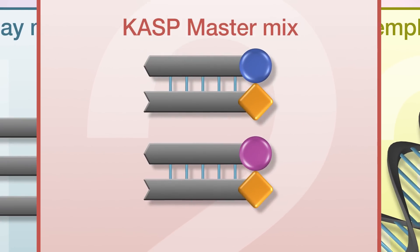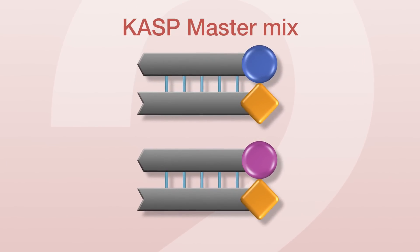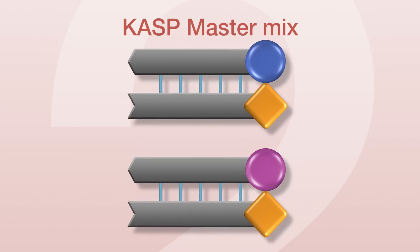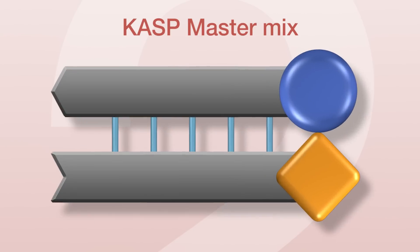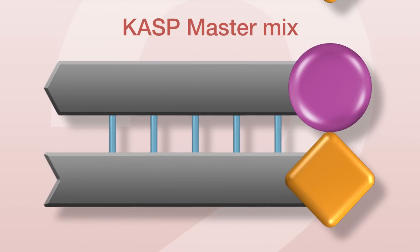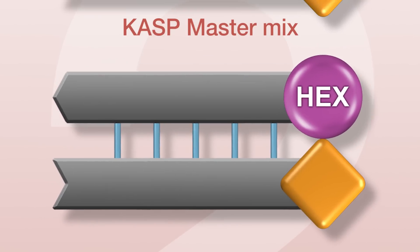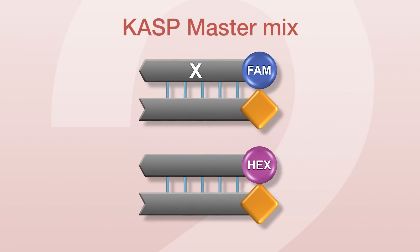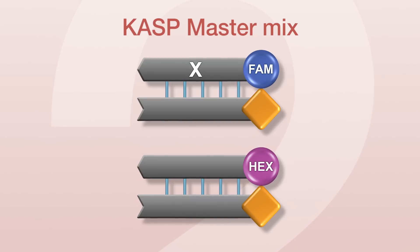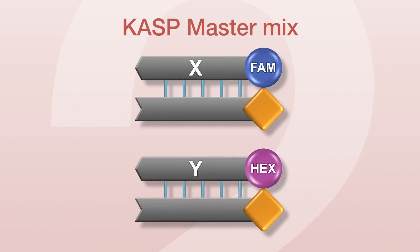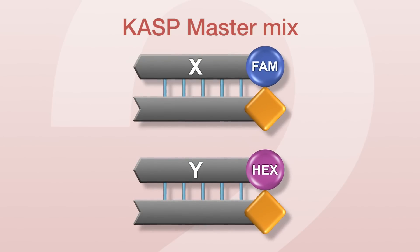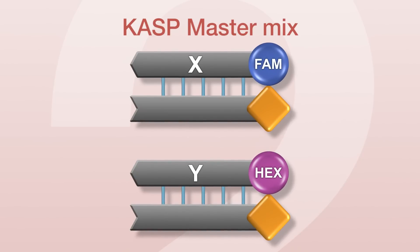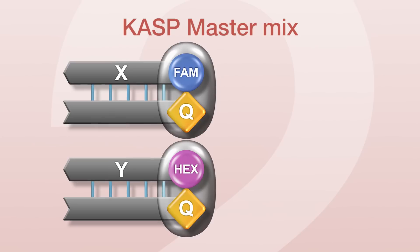The CASP master mix contains two fluorescently labelled reporter cassettes. Each cassette is comprised of two oligonucleotides — one labelled with a fluorophore and the other which includes the quencher. One cassette is labelled with the FAM fluorophore and the second with the HEX fluorophore. The sequence of the FAM-labelled oligonucleotide is identical to that of tail X on the first allele-specific primer. Similarly, the sequence of the HEX-labelled oligonucleotide is identical to that of tail Y on the second allele-specific primer. At this stage, the fluorophore-labelled oligonucleotides are bound to the complementary oligonucleotides that include the quenchers, resulting in no fluorescent signal being produced from either fluorophore.